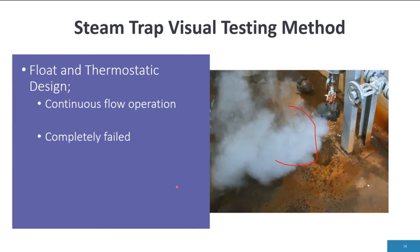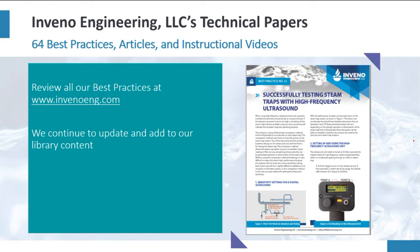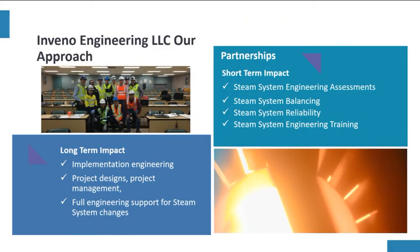As you can see, the different types of steam trap visual indication are very powerful and very easy to do. At our website, we have many different technical papers on testing steam traps, as well as different applications for steam systems, installing steam safety valves, 64 best practices, many different articles, and a number of videos for your review. Our information is generic and we are here to help the steam world better understand steam systems. Our services include steam engineering assessments, steam system balancing, steam system reliability, and steam system engineering training.